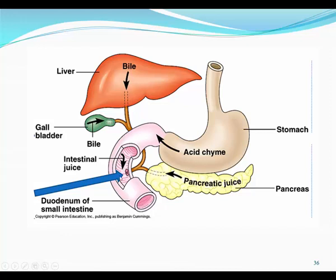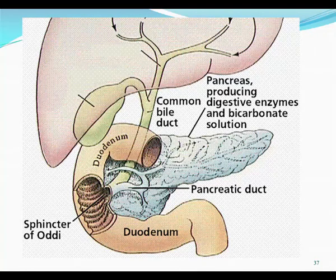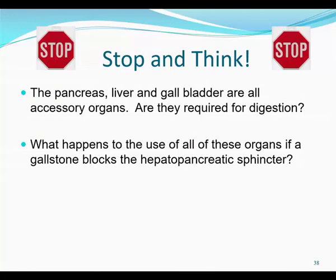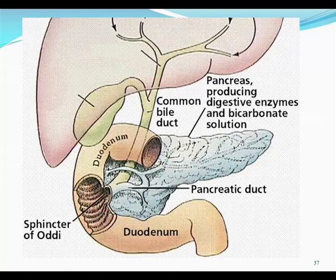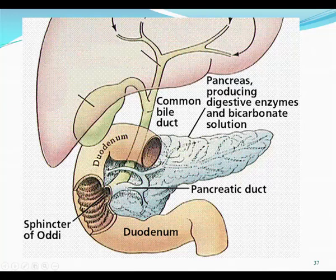Bile emulsifies fat, bicarbonate neutralizes, and all those enzymes help digestion. The liver makes bile, which comes down the hepatic duct, backs up the cystic duct to be stored in the gallbladder, and is released into the duodenum via the common bile duct. It meets the pancreatic duct and dumps into the duodenum at the hepatopancreatic sphincter, also called the sphincter of Oddi. Pancreas, liver, and gallbladder are all accessory organs — you need bile, bicarbonate, and pancreatic enzymes. If a gallstone got stuck at that junction, you would block both bile and pancreatic juice, which would be really bad.